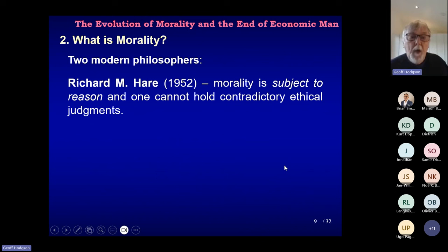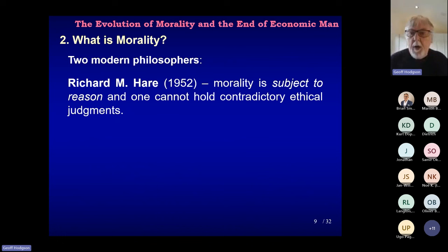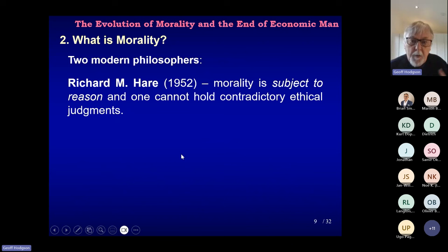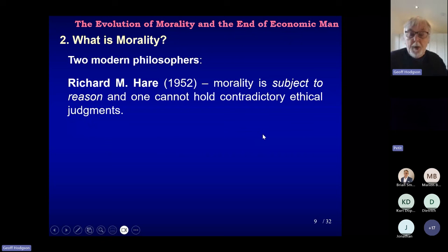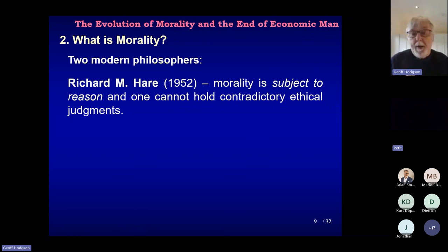I now face the minefield of trying to summarise modern philosophy or ethics in terms of what morality means. I'm going to quote three people, two of which are very prominent moral philosophers of the 20th century. Hare, for example, in his famous book on morality, makes the point that morality is subject to reason. Therefore one cannot hold contradictory ethical judgements — if one does, one has to disentangle that inconsistency and move forward to a consistent position. Ethical judgements have a rational basis: reasoning, deliberation, and so on.